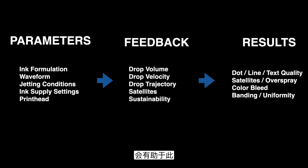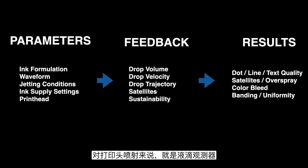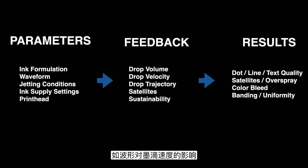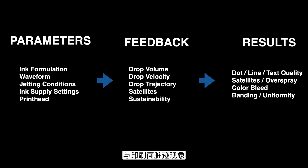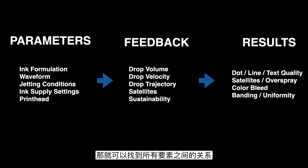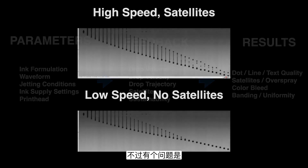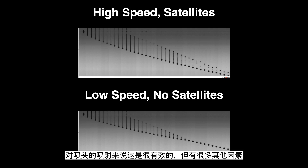Something that can help with this is having a feedback mechanism in between — something we can perform analysis and measurements on as an intermediate step. In the case of jetting, that's the drop watcher. Measuring drop volume, velocity, and trajectory, it's very easy to connect the impact of the waveform on drop velocity, and easy to connect drop velocity to the amount of satellites and overspray you see in the print.